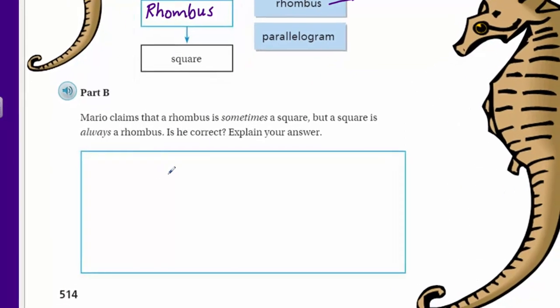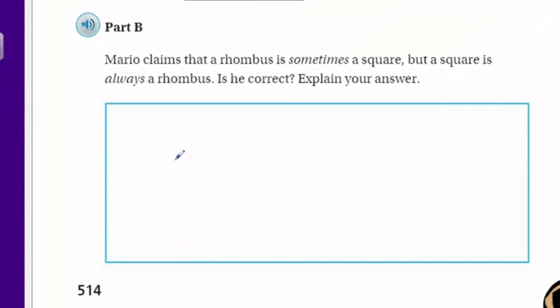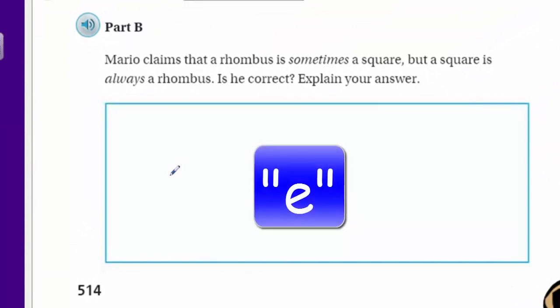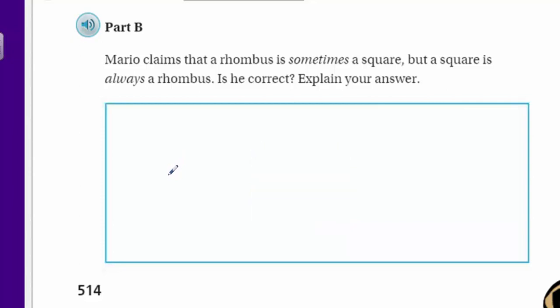Part B says Mario claims that a rhombus is sometimes a square, but a square is always a rhombus. Is he correct? Explain your answer. We were just talking about that one right up above. I can say that almost definitively - I would say yes, this will be my final answer. I say absolutely yes. A square has four sides that are congruent and equal. So does a rhombus. See, a square with these features is also a rhombus, because that's the only requirement to be a rhombus - to have four congruent sides. However, try to switch it - it doesn't work. See, a rhombus does not have 90 degree angles. Therefore, it is not a square.